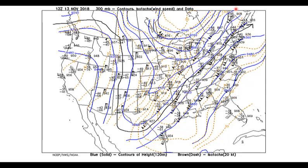This spreading out is called divergence. When divergence occurs, the wind actually slows down a little bit. The strongest winds are located right here in what's called a jet streak. As you move a little further northeast the winds, while still strong, are a little bit weaker because these contour lines are pulling apart a little bit.